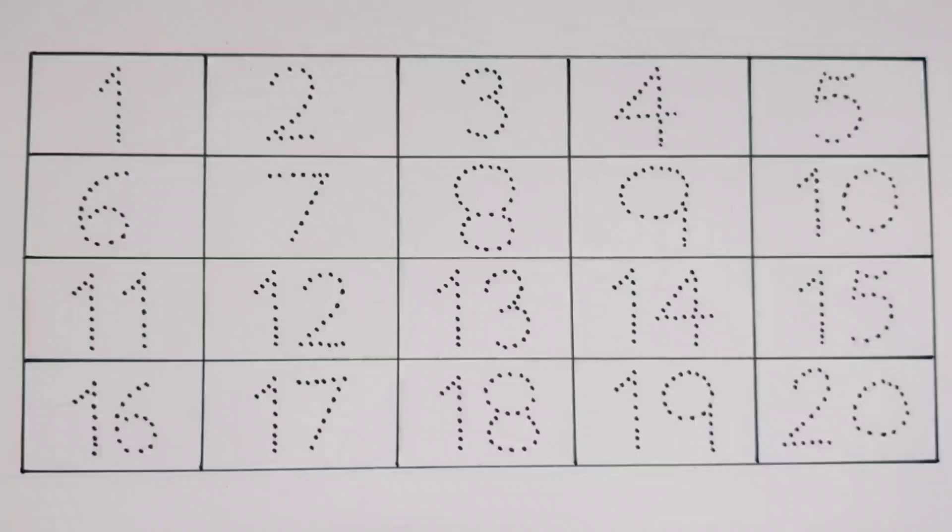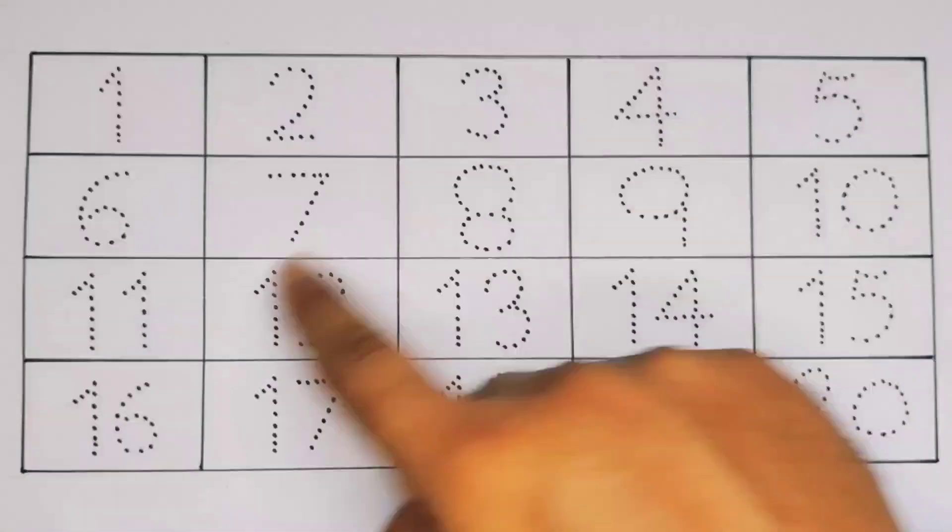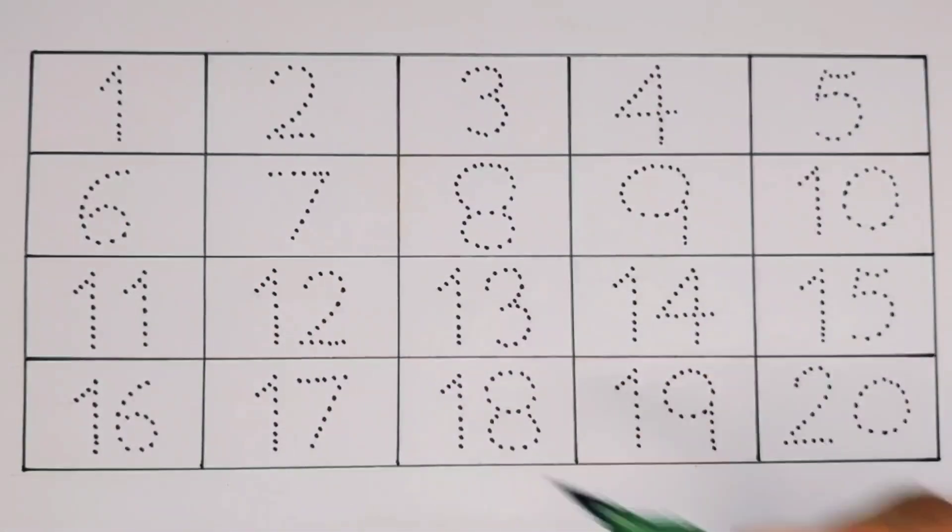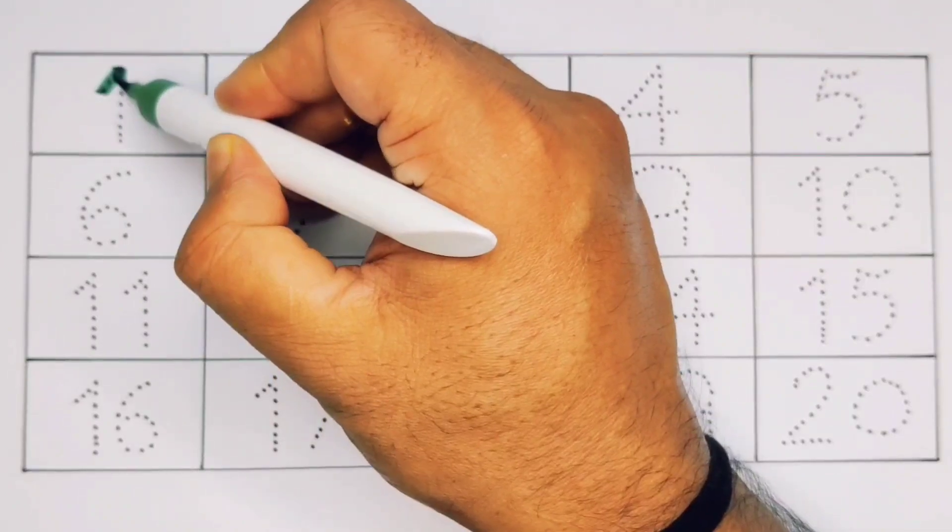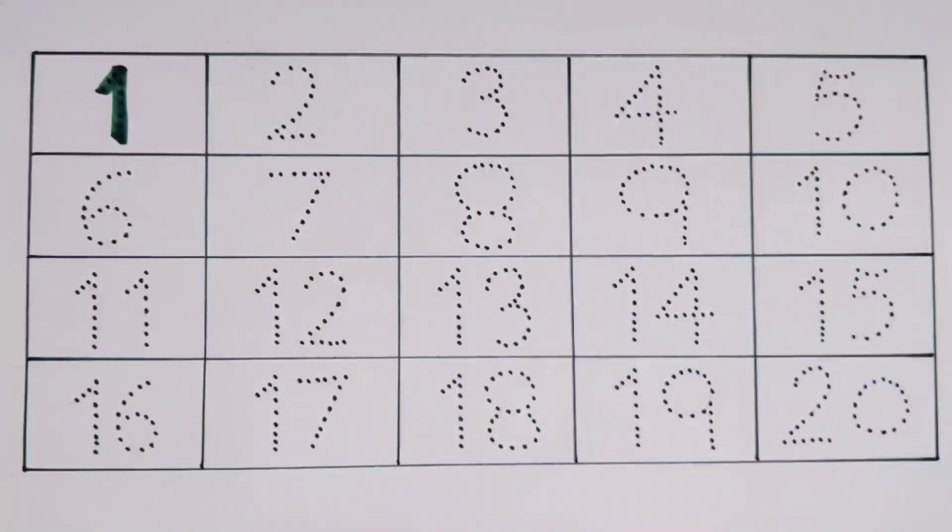And orange color. Now let's learn the numbers, counting one to twenty. First, one, number one. Next...